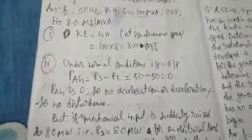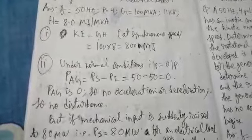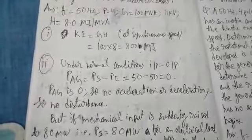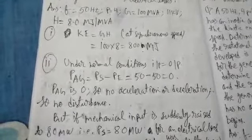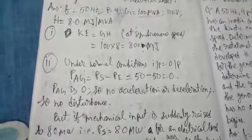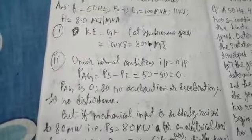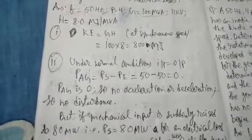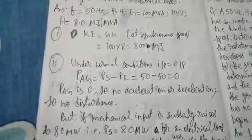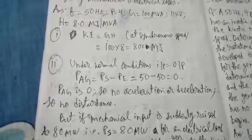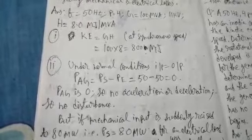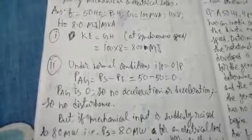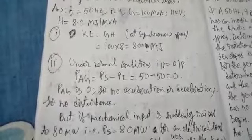Number two: at first, under normal conditions, we know that input power and output power are always equal to each other. Depending on that, we can analyze our accelerating power. Accelerating power of a generator is given as PAg = Ps - Pe, where Ps is the input power and Pe is the output power.